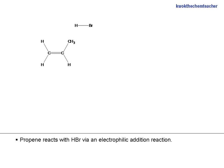Propene reacts with HBr via an electrophilic addition reaction. HBr is a polar molecule with H being electron deficient. Hence, the electron deficient H is the electrophile.